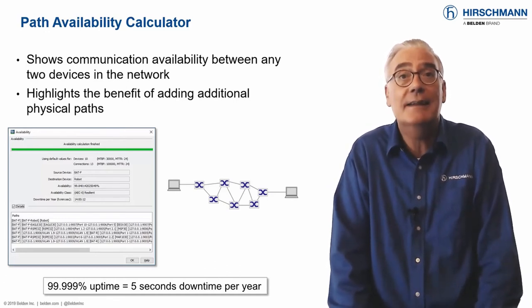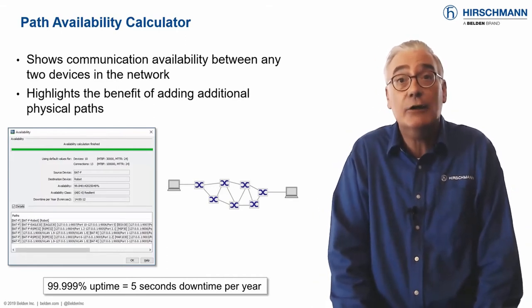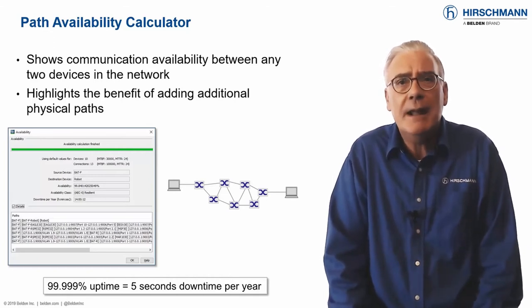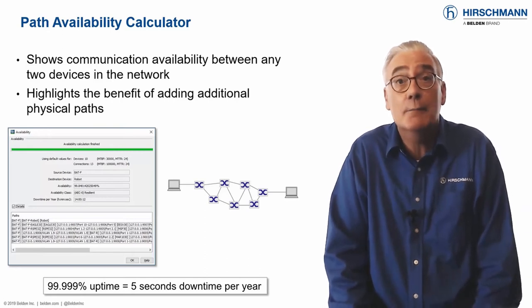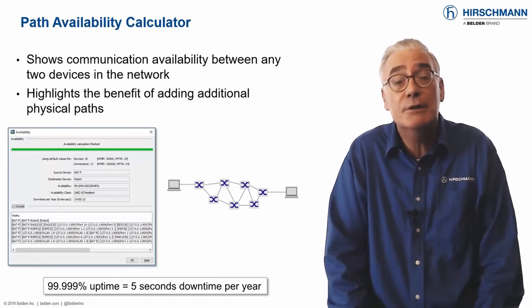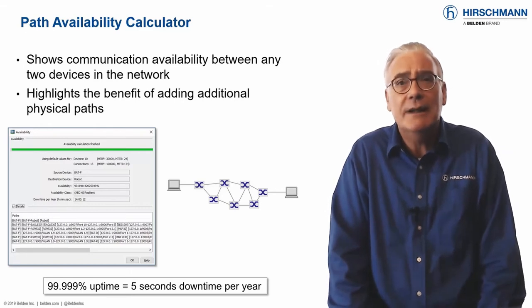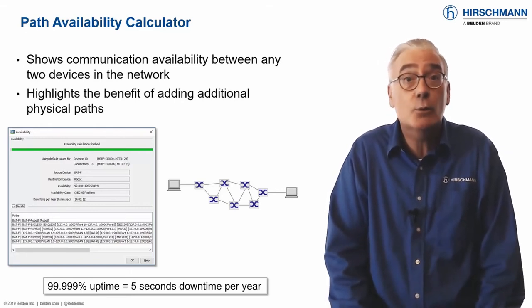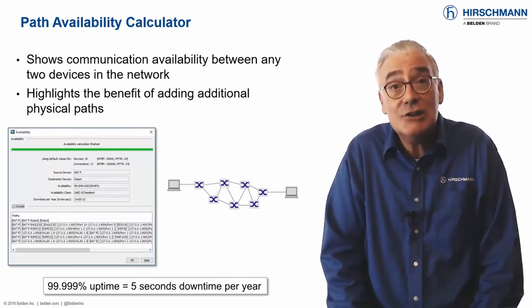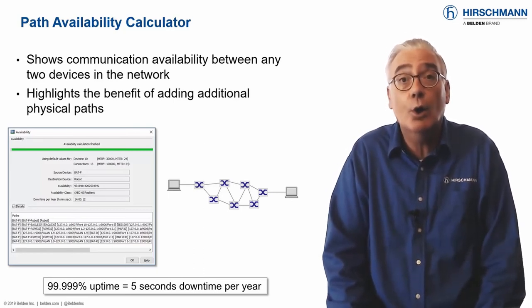But, as its name suggests, it can calculate the availability of a path through the network. This depends on the mean time between failures and the mean time to repair of the network devices, and the redundant paths between the devices. It's a highly theoretical tool, but it can help you understand the strengths and weaknesses of your network topology and the additional availability you could gain by adding redundant devices or connections.